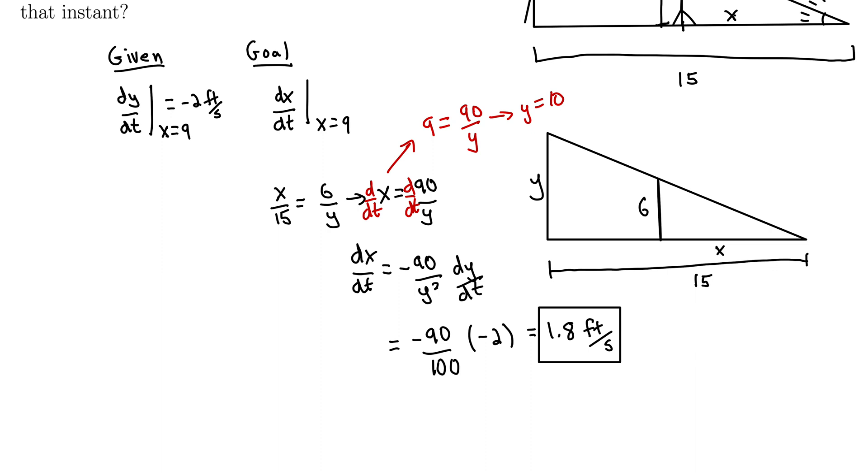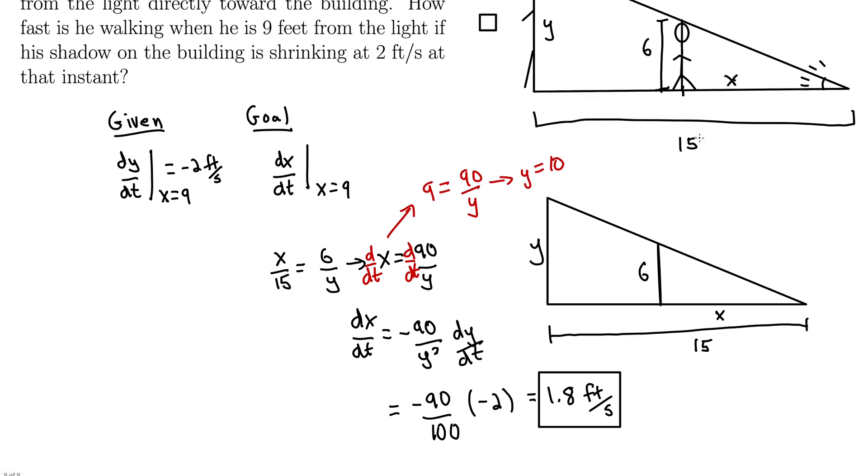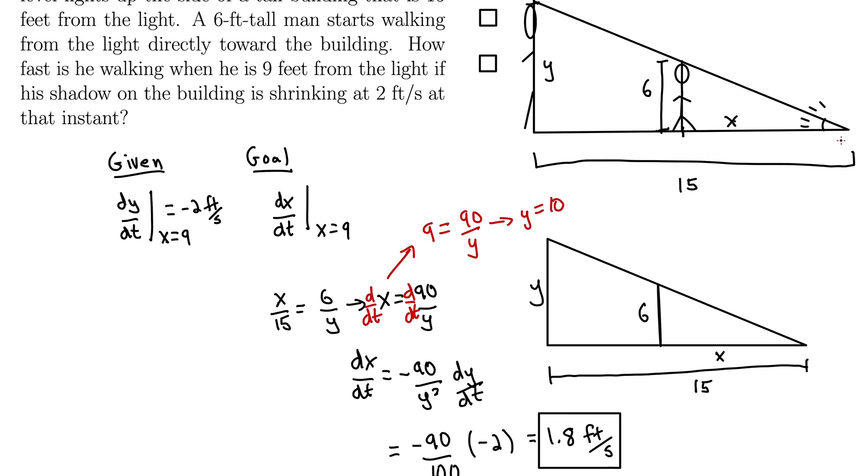Now, you may protest and say, well, shouldn't that be negative 1.8 because he's walking to the left? Well, no, because since this distance X would be 0 right up against the light and is getting bigger and bigger as he walks away from the light, this distance must be the positive direction. So, as he walks towards the building, we're defining that to be the X positive direction. So, indeed, this should be positive, which is the result we got.